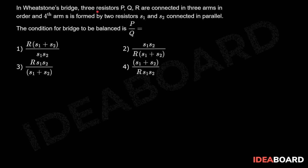In Wheatstone's bridge, three resistors P, Q, R are connected in three arms, and the fourth arm S is formed by two resistors S1 and S2 connected in parallel.